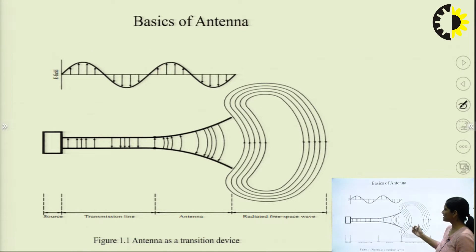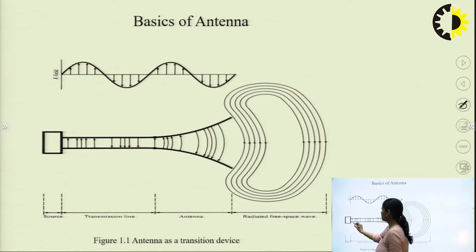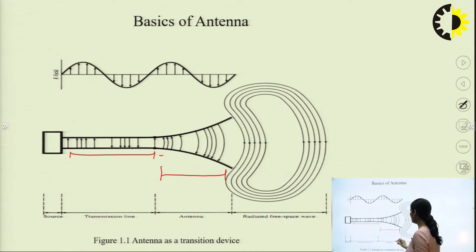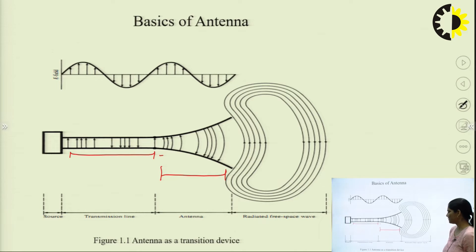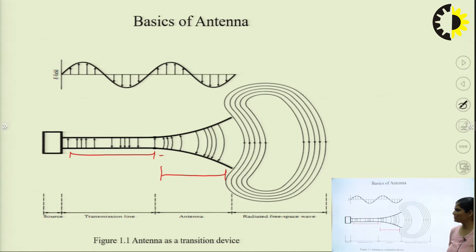This is the structure of the antenna. Here there is a source, this is the transmission line, and this is the antenna. From here to here is the antenna, and this is the part of the radiated free space wave. So this is the structure of the antenna — you can say it is a transition device.